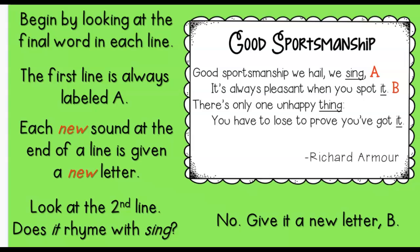So let me first read the poem, and then we'll go back and talk about labeling it. This poem is called Good Sportsmanship. 'Good sportsmanship, we hail, we sing. It's always pleasant when you spot it. There's only one unhappy thing you have to lose to prove you've got it.' By Richard Armour. So when we're talking about rhyme pattern, we need to begin by looking at the final word in each line. We have sing, it, thing, and it.